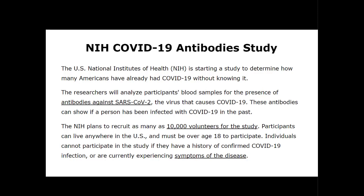The NIH wants to analyze participants' blood samples for the presence of antibodies that fight SARS-CoV-2, the virus that causes COVID-19. These antibodies will show up in anybody that has ever been infected. The NIH plans to recruit about 10,000 volunteers who live anywhere within the United States, are over age 18, can consent themselves, and have never had a confirmed case of COVID or are not currently experiencing symptoms. They want to know how many of these people were exposed and never knew it — how many are immune and never knew it.